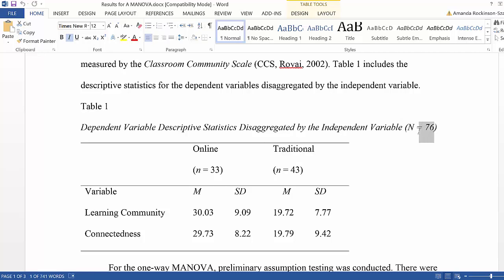the number within the sample population here, which is 76, as well as the mean and standard deviation for each of the dependent variables disaggregated by the independent variable.